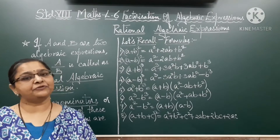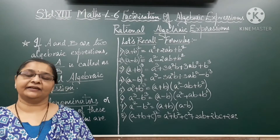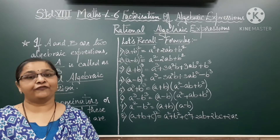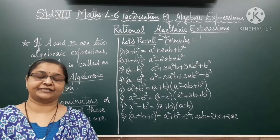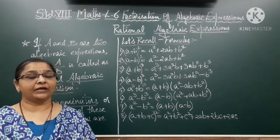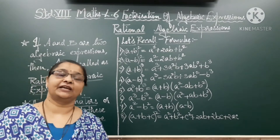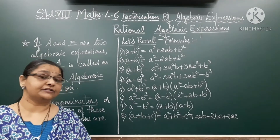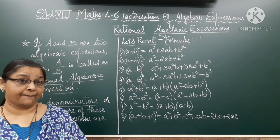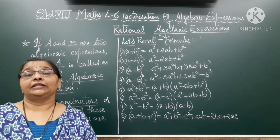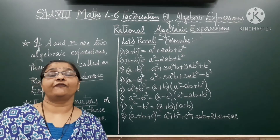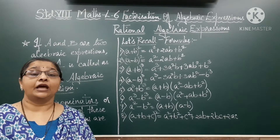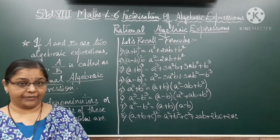Hello friends, welcome to Standard A Maths Chapter 6, Factorization of Algebraic Expressions. Today we are going to learn about Rational Algebraic Expressions. You have already learnt about Rational Numbers. Rational Numbers are in the form of M upon N, that is in the form of Numerator and Denominator.